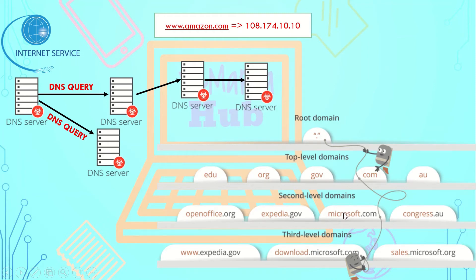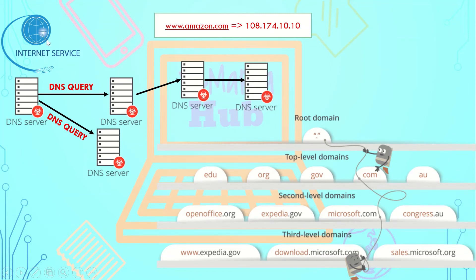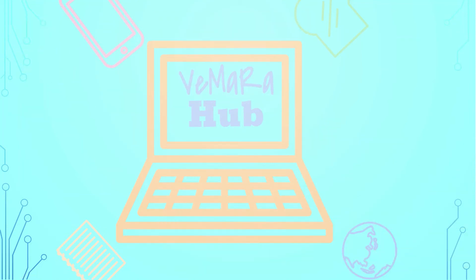From the top-level domain, it will go and search in the second-level domain, amazon.com. If the DNS record is not found in the second-level domain, there is a third-level domain below it to search further. So from the root domain it searches the .com top-level domain, then the amazon.com DNS server is found and we get the IP address mapping for the URL, which is returned back to the ISP and to the browser.